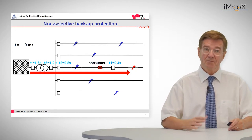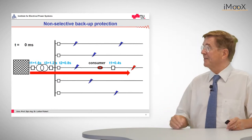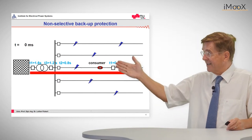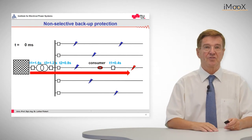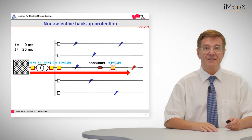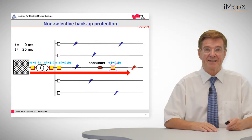So in this previous chapter, we saw that when there is a fault at the end of this line, indicated by this red flash, the current goes through all protection relays. All these relays will pick up as is indicated in yellow.